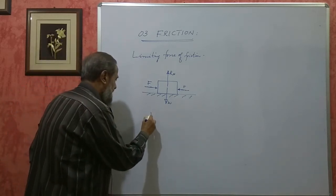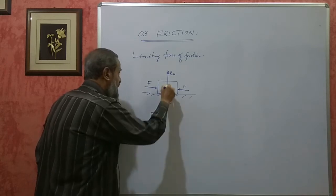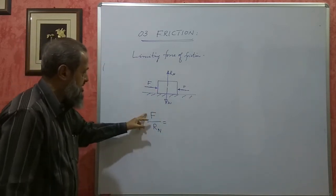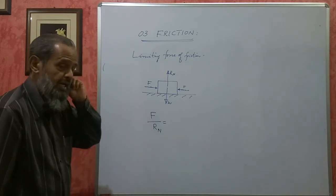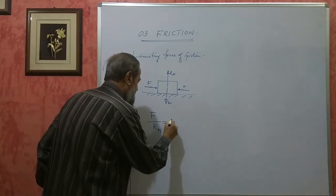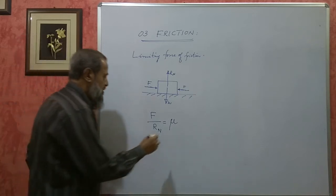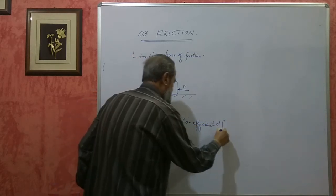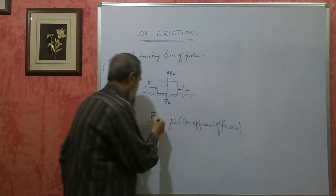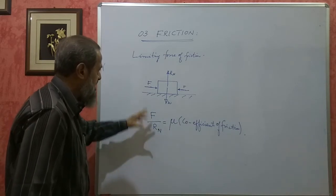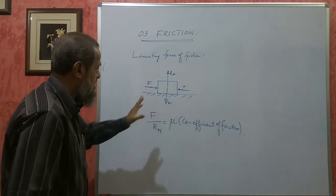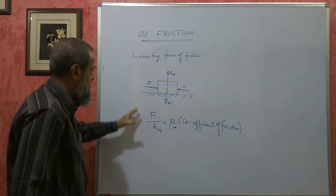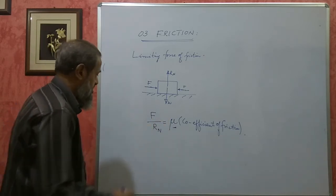This limiting force of friction bears a constant ratio with the normal reaction — F by Rn is constant. For a given pair of surfaces, the ratio of limiting force of friction to normal reaction is a constant, denoted by mu. This is known as the coefficient of friction. It is defined as the ratio of limiting force of friction to the normal reaction between a given pair of contact surfaces. It has no unit.